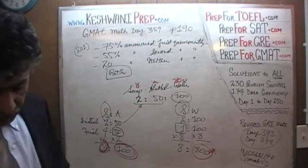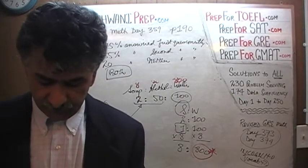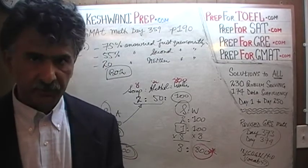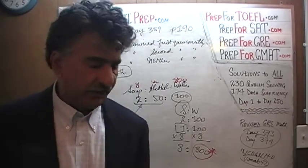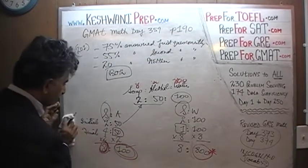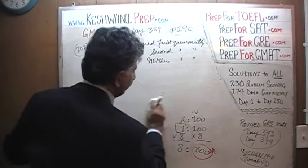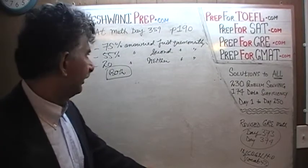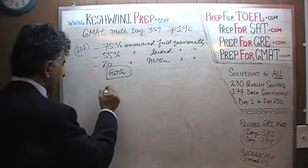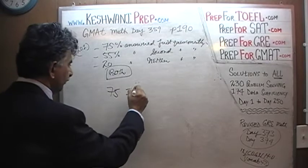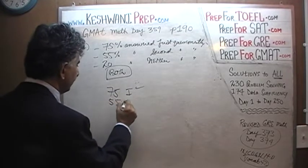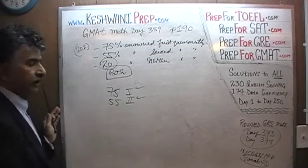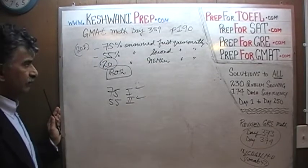How many people answered both? Forget about the percentages — in the entire process we are going to pretend that we have 100 people. 100 people equals 100 percent. It's a pretty straightforward, simple Venn diagram problem. We have 75 people who answered the first question correctly, 55 people who answered the second question correctly, and 20 people answered neither of them correctly.